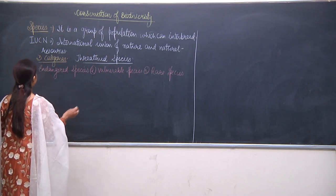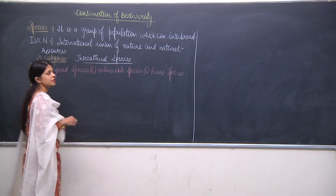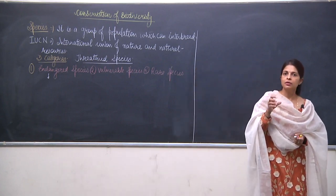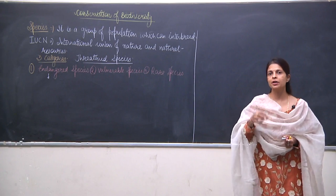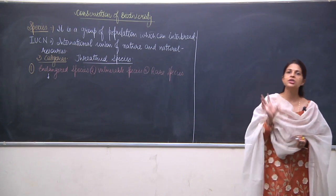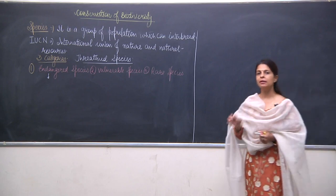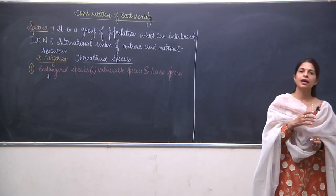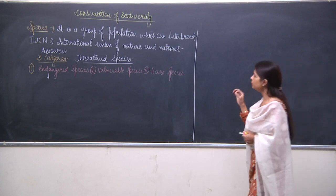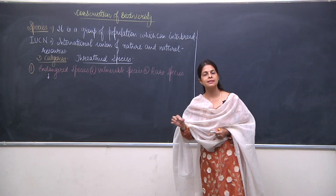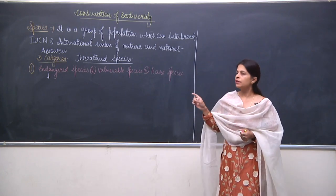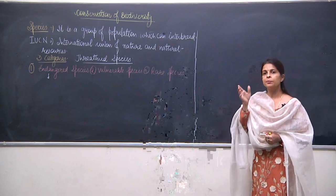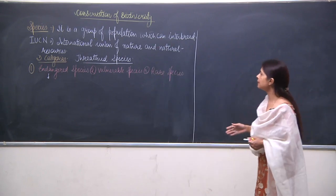Now let's discuss the first category: endangered species. Endangered species are those in which the animals need immediate help. The number has reduced to a great extent, and if certain important and useful measures and steps are not taken and this continues for a few more years, these species will come into the category of extinct species.